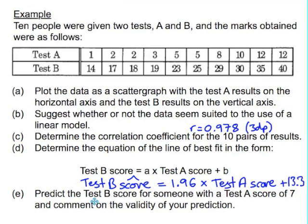Finally, we're asked to predict a test B score for someone with a test A score of 7. This might be somebody who was present for test A but absent for test B, and we want to infer a reasonable score for that person.